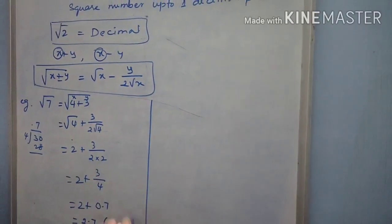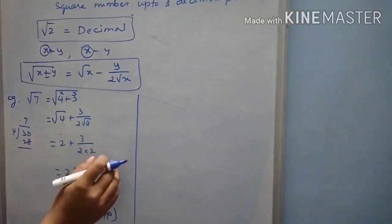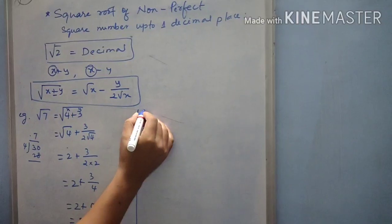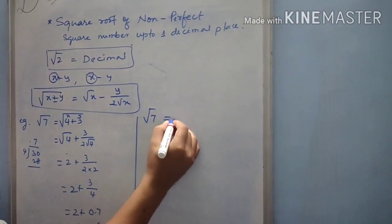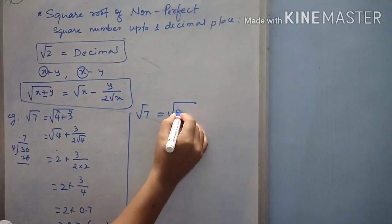So, similarly, now if I do in the minus method, answer also will be same. Let us see now. Root 7 can be written as square root of 9 minus 2.